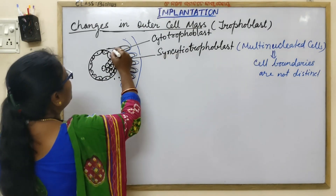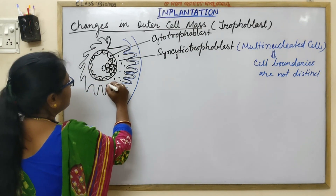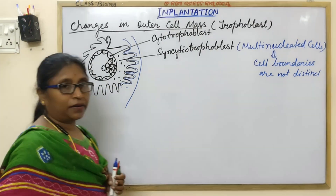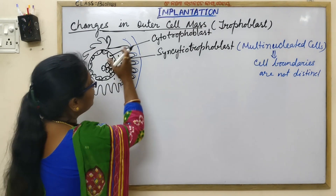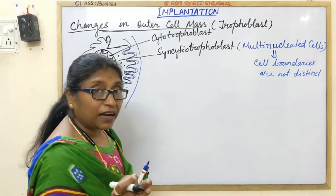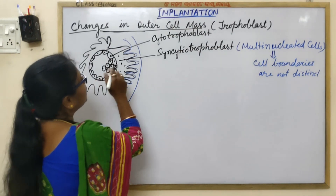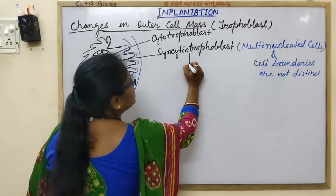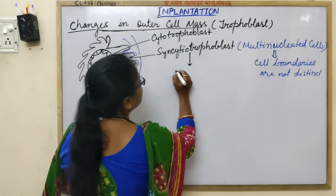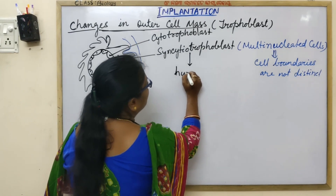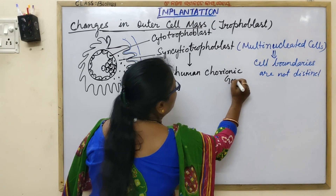The syncytiotrophoblast is also formed on the other side but in a slow manner. The side which remains attached with the endometrial lining of the uterus grows rapidly. The syncytiotrophoblast secretes HCG — human chorionic gonadotropin.